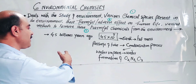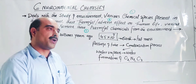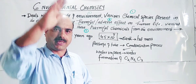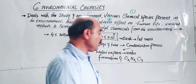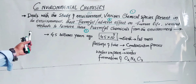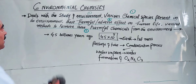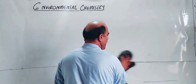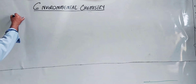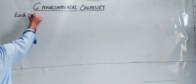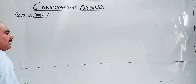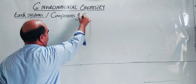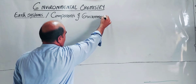Next topic is the components of the environment. The environment has components — these are also called the earth systems. There are components of the environment, and we will study each one. In the environment there are four main components.